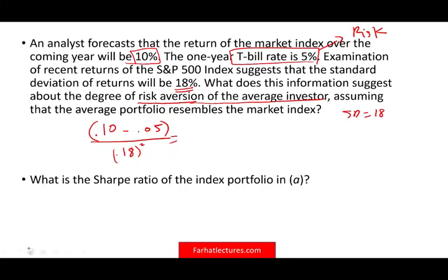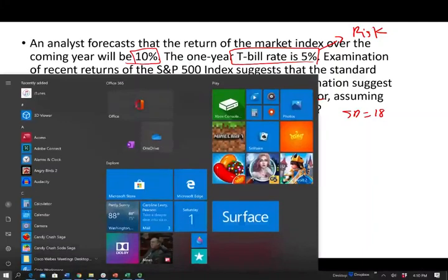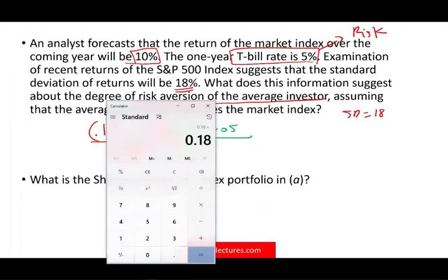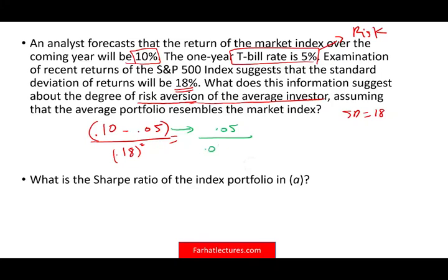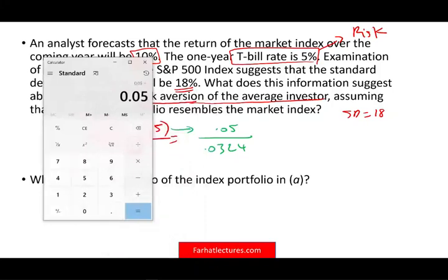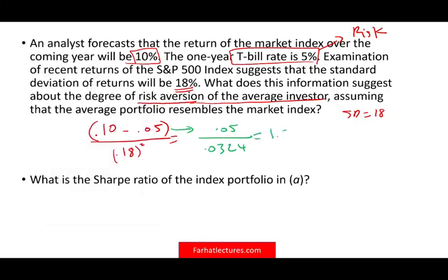The risk premium of this portfolio is 5% (10 minus 5). Now we take 0.18 times 0.18, which gives us 0.0324. We then take 0.05 divided by 0.0324, and that gives us an approximate risk aversion A of 1.54. That's the risk aversion for your typical investor given this portfolio.